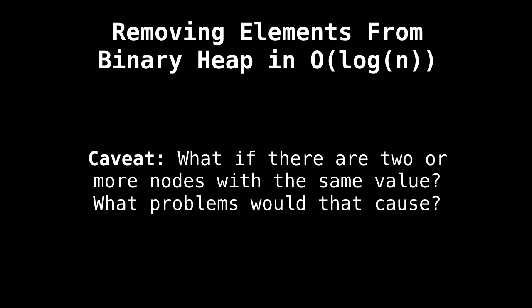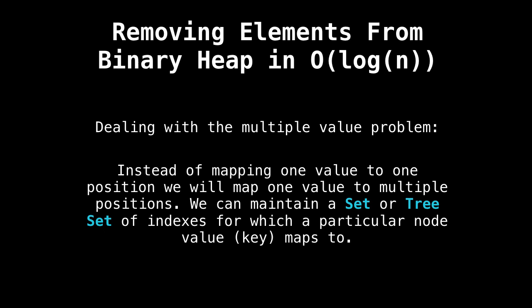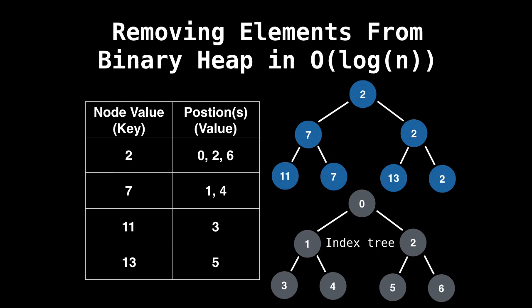That sounds great, except for one caveat or two. What about if the heap has multiple nodes with the same value? What problems would that cause? Well, just a few but nothing we can't handle. To begin with, let's talk about how we can deal with the multiple value problem. Instead of mapping one value to one position, we will map one value to multiple positions. And we can do this by maintaining a set or a tree set of indices for which a particular node value or key maps to. Let's look at an example.